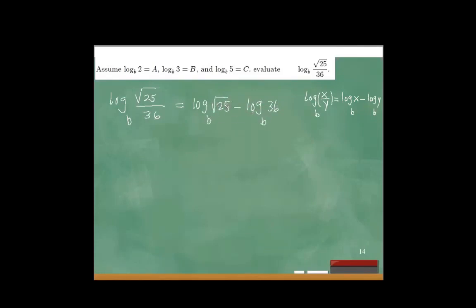The goal here is to make this equal to log of 2, 3, and 5, so we're looking for factors of 2, 3, and 5. For the square root of 25, that's already 5, so that's log base B of 5, which equals C. So I know this part is already equal to C.